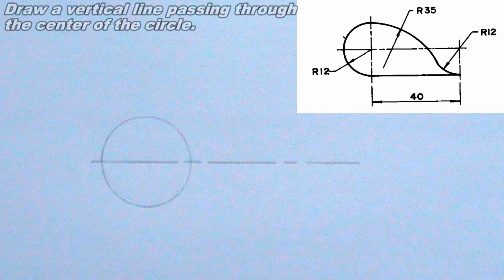Next, I will draw a vertical line passing through the center of the circle. The vertical line should also be a thin chain line.